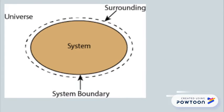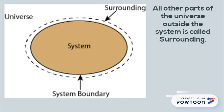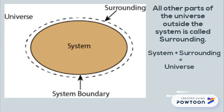As you can see on the screen, there is a universe which is enclosed by a boundary. The other parts of the universe outside the system is called surroundings. So thermodynamically, system plus surroundings equals universe.